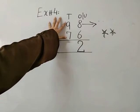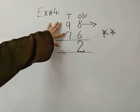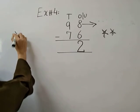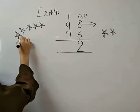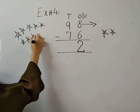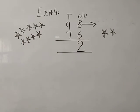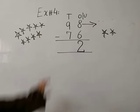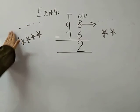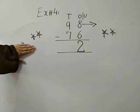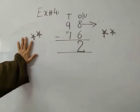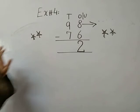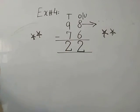Then the tens place value: 9 minus 7. Draw nine stars and remove seven stars. Now we have just 2 remaining stars. So we write 2 in the tens place value.